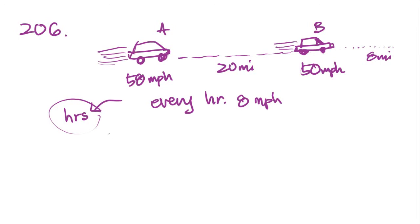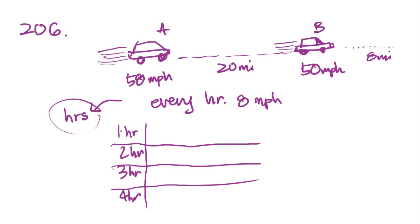So if we set up a simple chart, we get, let me set up a chart. One hour, two hours, three hours, four hours. We know that after one hour, this 20 mile gap will have diminished by 8 miles. So there's going to be 12 miles between them. After the second hour, it's going to diminish by another 8 miles. So there's going to be 4 miles between them. And I figured this out simply by subtracting 8 from 12.